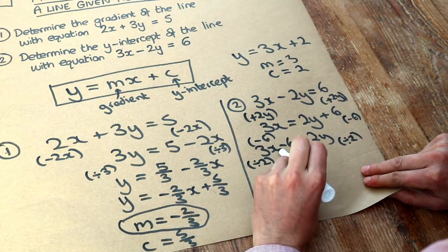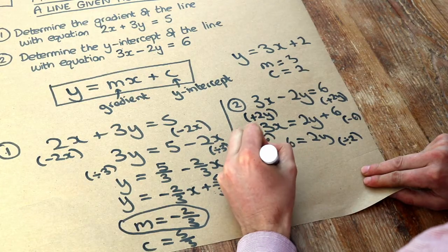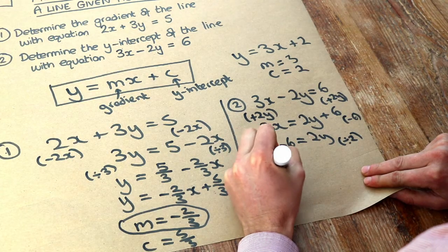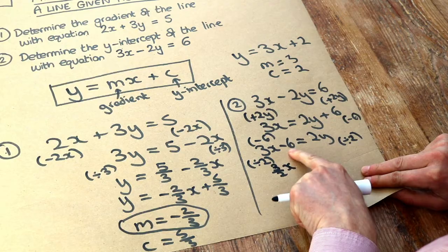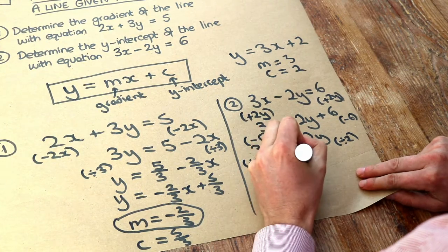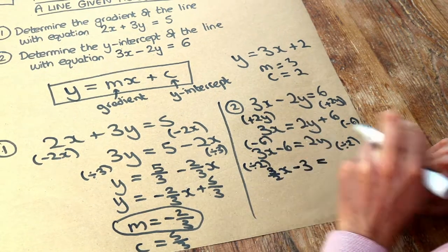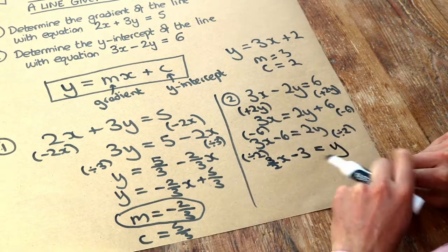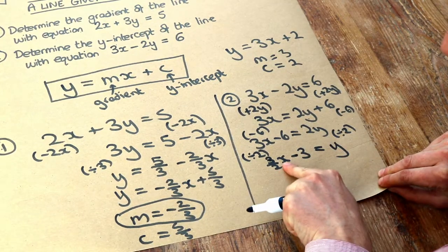So 3x divided by 2, 3 over 2 is 3 over 2. We get 3 over 2x, and then the minus 6 divided by 2 is minus 3, equals 2y divided by 2 is y. Now we've got it in the form y equals mx plus c.